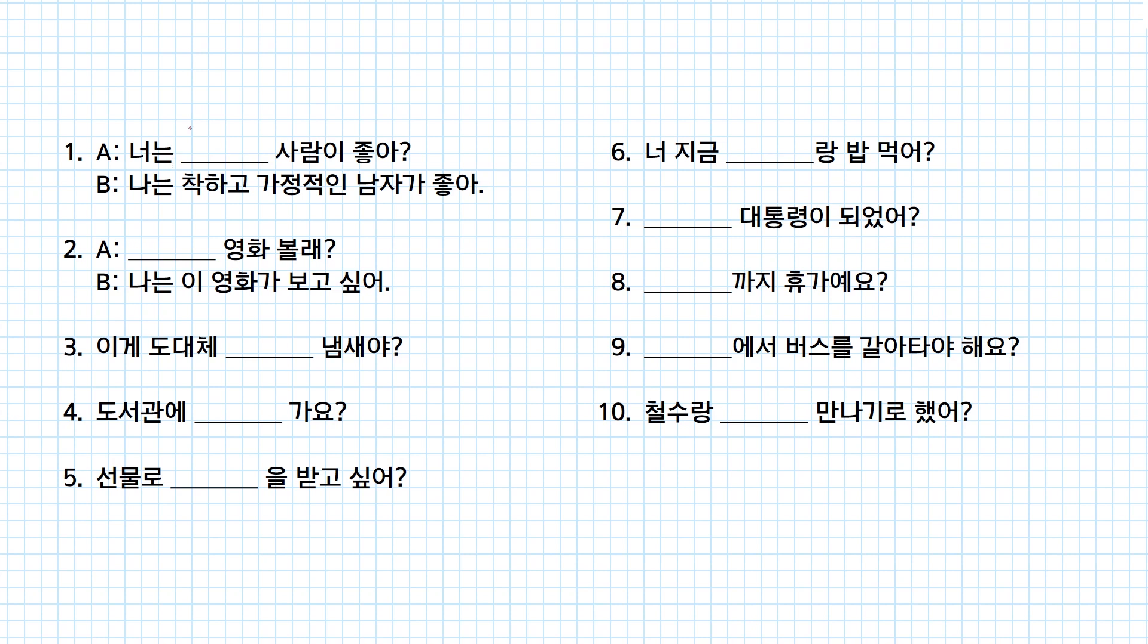Now here comes the grammar quiz. 너는 어떤 사람이 좋아? 나는 착하고 가정적인 남자가 좋아. I like the man who's kind and who's also a family man. So here 어떤 사람이 좋아? Because you're asking the characteristics of this person. Number two, 어느 영화 볼래? 나는 이 영화가 보고 싶어. I wanna watch this movie. The determiner is used. Therefore 어느 영화 볼래? As I mentioned earlier, there are two ways to answer 어느 questions. The first one with 이, or 그, or 저, or proper nouns.